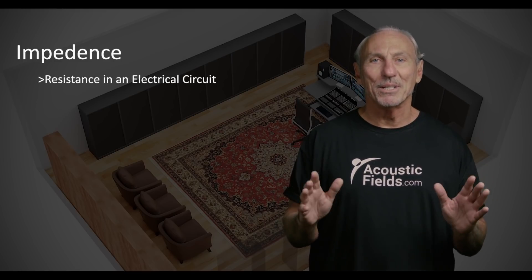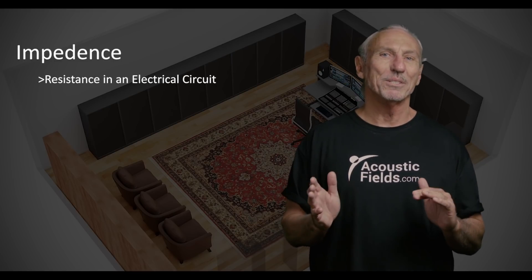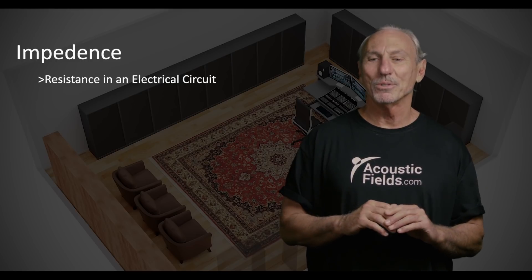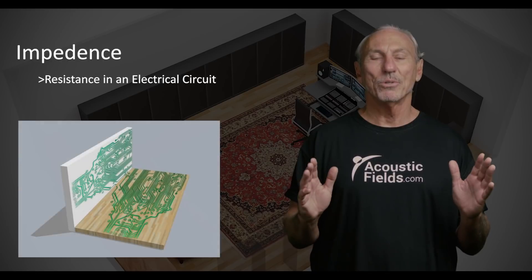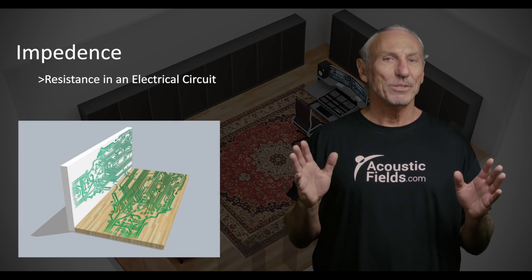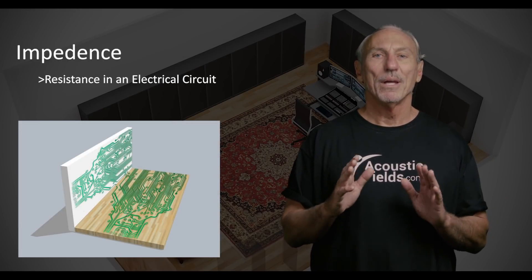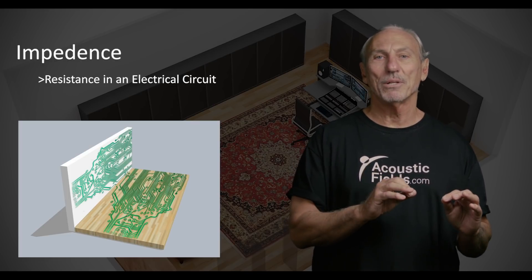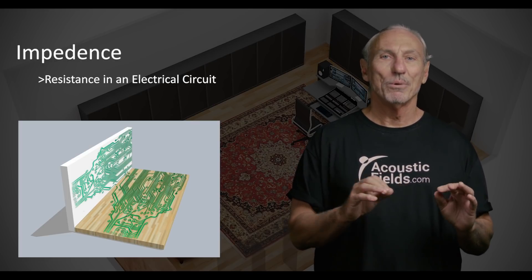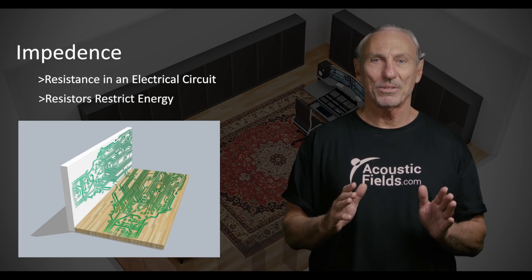Impedance, as we know, is the effective resistance in an electrical circuit. So what does resistance in an electrical circuit have to do with acoustics? You have to think of your room as an acoustical circuit — it has a lot of similarities to electrical circuits. And the first thing you do in an electrical circuit when you want to restrict voltage or restrict certain things is you use resistors.